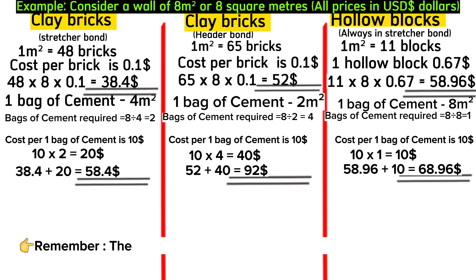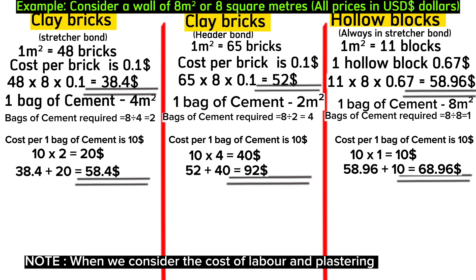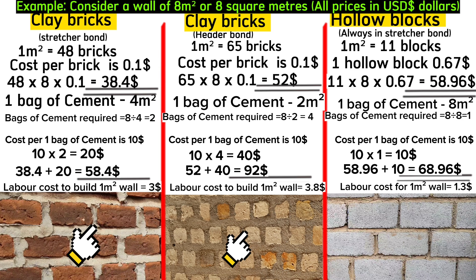When we consider labor costs: masons charge around $3.00 per square meter for stretcher bond, $3.80 per square meter for header bond, and only $1.30 per square meter for hollow blocks. This is because it takes much more time to lay many small bricks compared to large blocks, resulting in faster construction and lower labor cost with hollow blocks.